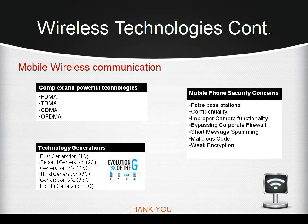There are four technology generations. The first generation is analog, and the rest are digital: second generation, third generation, and fourth generation, so-called 4G. Some mobile phone security concerns listed by the author include false base stations, confidentiality issues, improper camera functionalities, malicious code, weak encryption, and short message spamming.